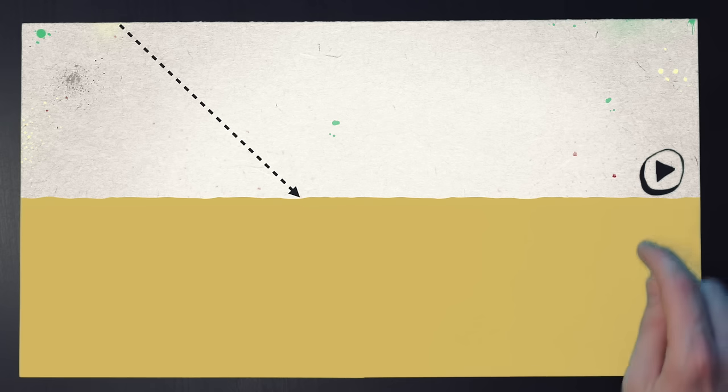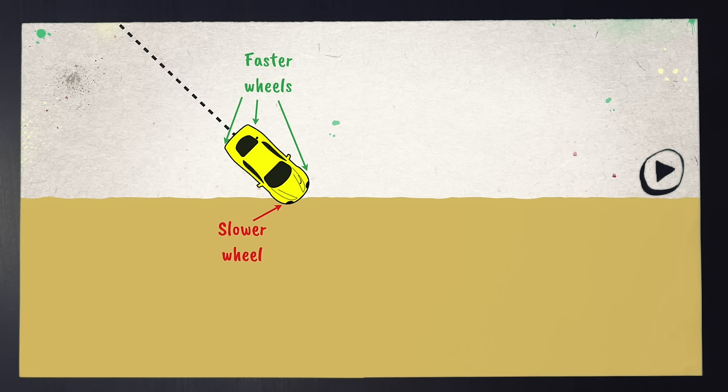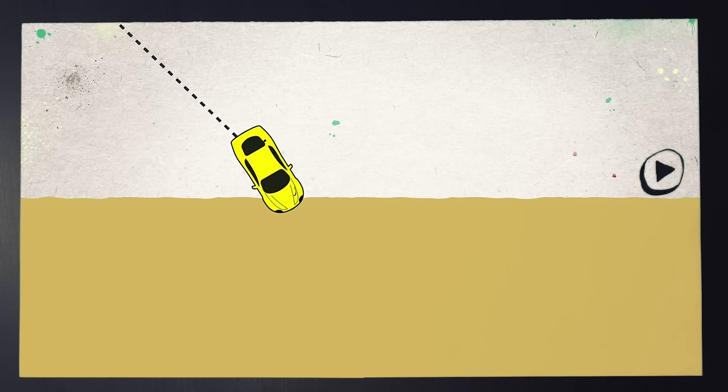But now imagine the car reaches the sand at an angle. As the first wheel reaches the sand, it slows down. But for a short period of time, the other wheels continue at a faster speed. Because the wheel on one side is going slower, the whole car turns slightly.